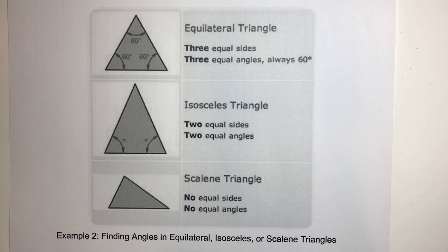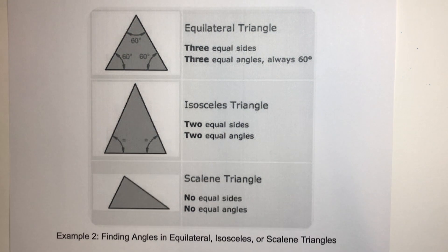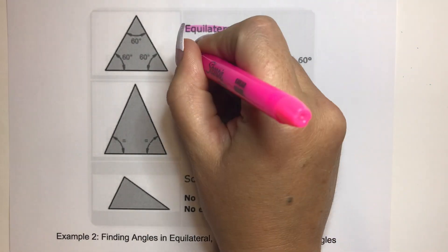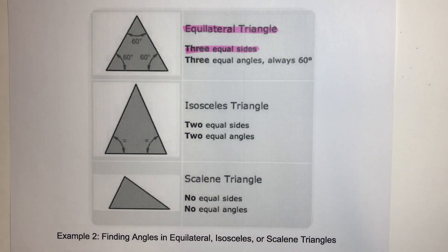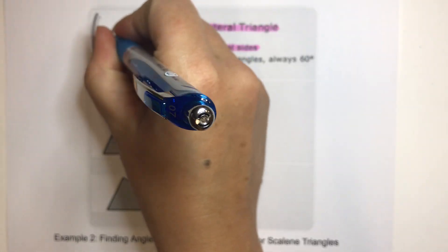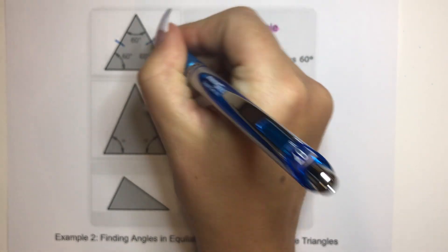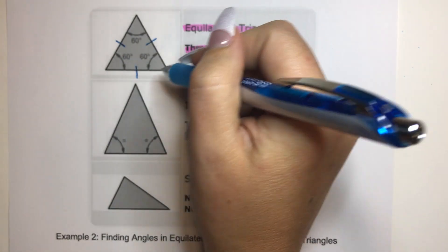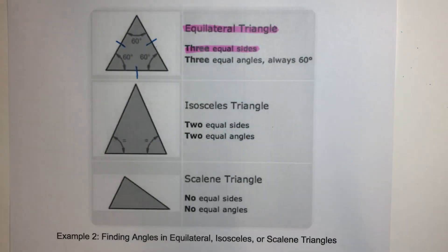Let's talk about some different triangles. One triangle would be called an equilateral triangle. Equilateral triangles have three equal sides. A lot of times when we're talking about a side that is equivalent to another side, we use these little hash marks. So that one hash mark means that those two are the same, and that means all three are the same side.